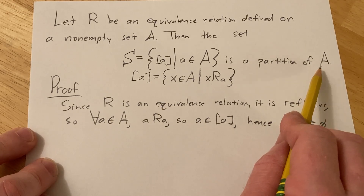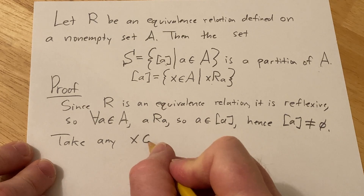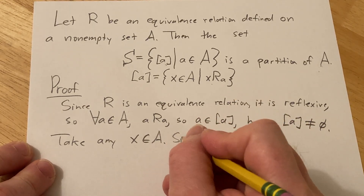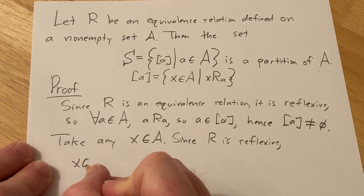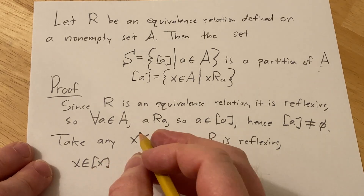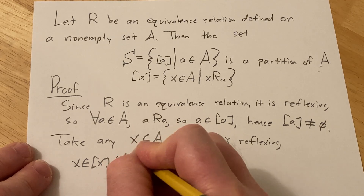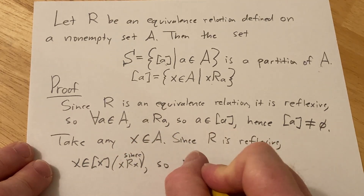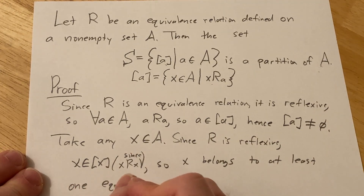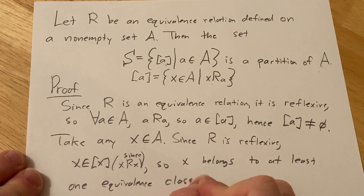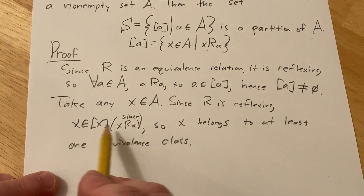Now we have to show that every element of A belongs to exactly one of these equivalence classes. So take any x in A. Since R is reflexive, we have that x is in the equivalence class of x, because x is related to x by reflexivity. So x belongs to at least one equivalence class. Now we have to show it belongs to at most one equivalence class, and that would imply it belongs to exactly one.